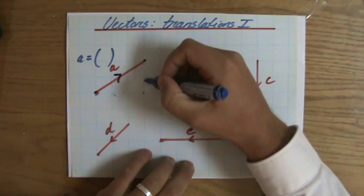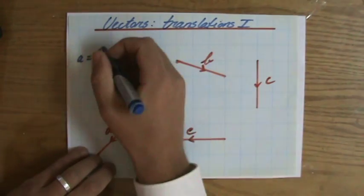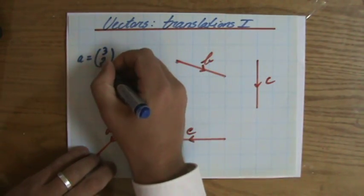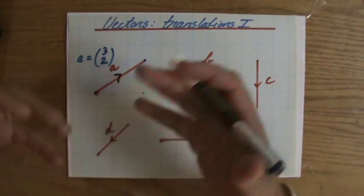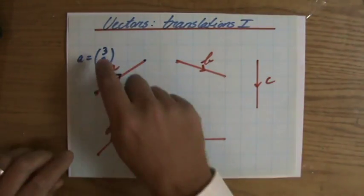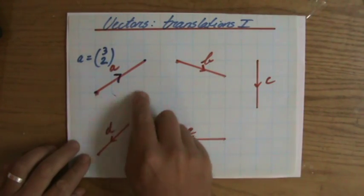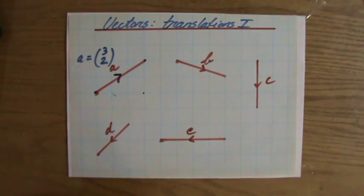And vertically I'm going one, two, up. So my column notation would be three, two. And please that is not a fraction. It's not three over two, three divided by two. No, this means three horizontally and then two vertically.